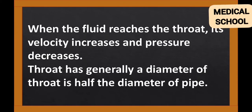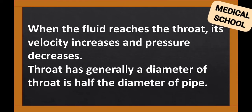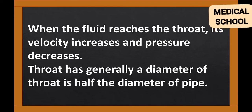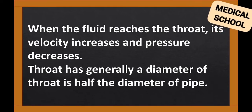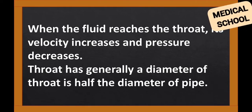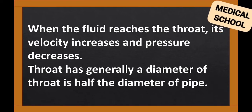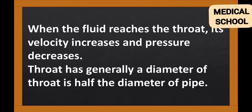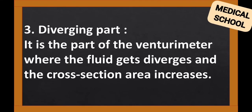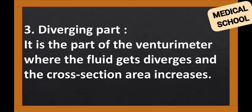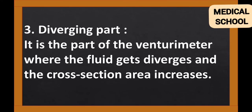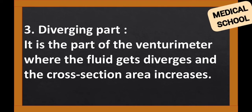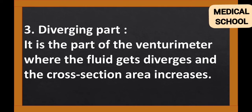When the fluid reaches the throat, its velocity increases and pressure decreases. The diameter of the throat is generally half the diameter of the pipe. The diverging part is the part of the Venturi Meter where the fluid diverges and the cross-section area increases.